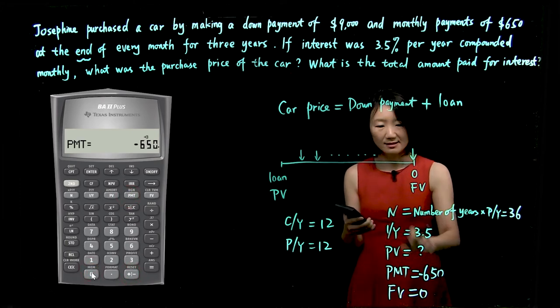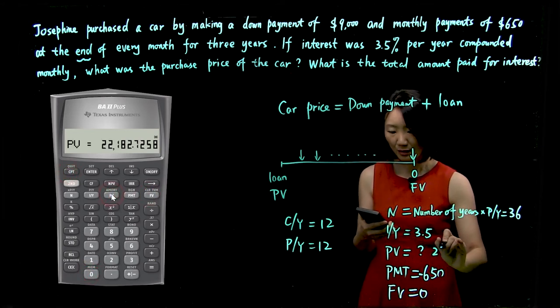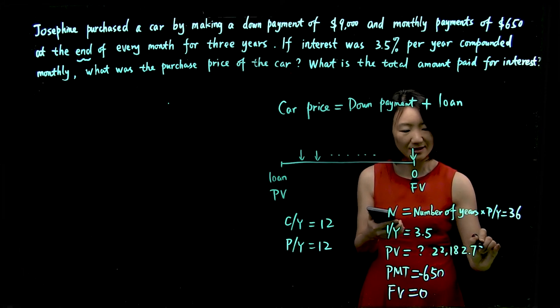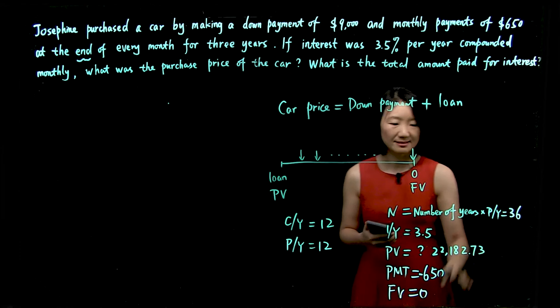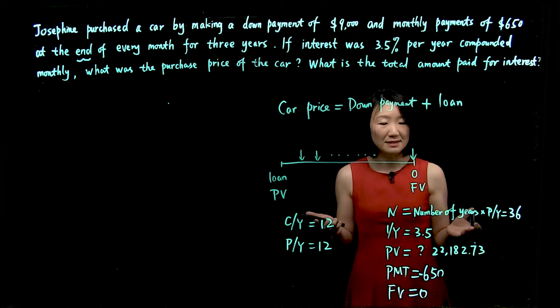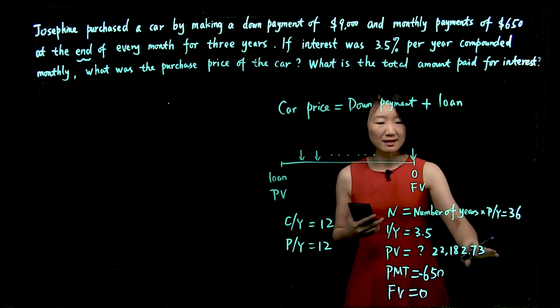Now let's compute present value. So we have $22,182.73. We round it to cents. And this number comes as positive. As you can imagine, it's for Josephine to receive the loan, the cash inflow. So it's positive.